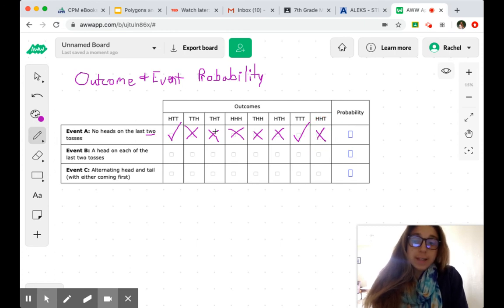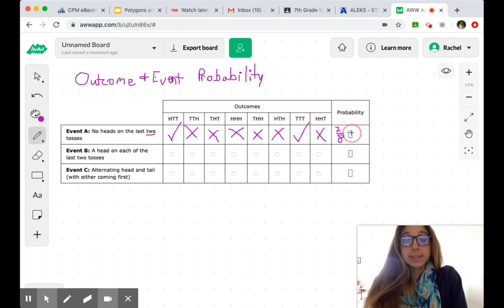So we had eight possibilities here. And in two of them, the event we wanted will occur. So we have two out of eight. We always write our fractions in simplest form for these types of problems. So that's going to look like one fourth.